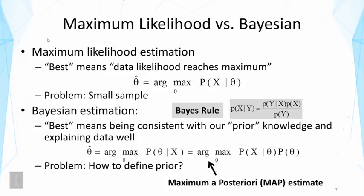The value of argmax is not the value of the function, but rather the argument that makes the function reach its maximum. So in this case, the value of argmax is theta — it's the theta that makes the probability of X given theta reach its maximum.